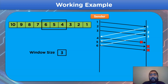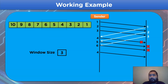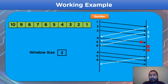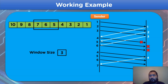According to the Go-Back-N ARQ protocol, we retransmit frame numbers 4, 5, and 6. After retransmission, frame number 4 gets acknowledged by the receiver side, meaning we can send the next frame — frame number 7 — and the sliding window appears on frame numbers 5, 6, and 7.